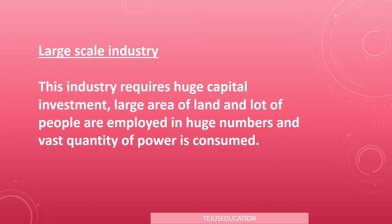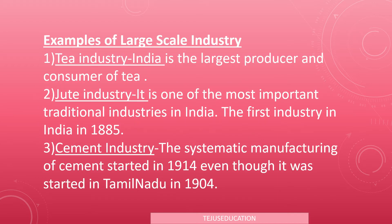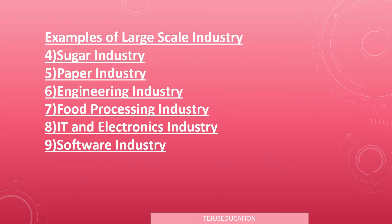Examples of large-scale industry: the tea industry — India is the largest producer and consumer of tea. Jute industry — one of the most important traditional industries in India. Cement industry — systematic manufacturing of cement started in 1914, though it began in Tamil Nadu in 1904. Other examples include sugar, paper, engineering, food processing, and IT and electronic and software industries.